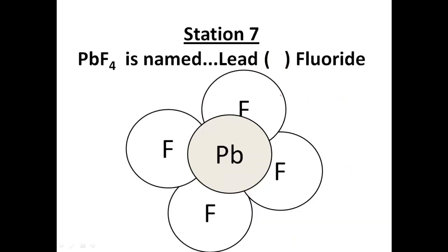In this example we have one lead atom and four fluorines. Each fluorine on the periodic table has a 1− charge, giving a total negative charge of 4−. I need 4+ to balance that, distributed over one lead atom — so the charge on lead must be 4+. In Roman numerals that's IV. This compound is named lead(IV) fluoride.